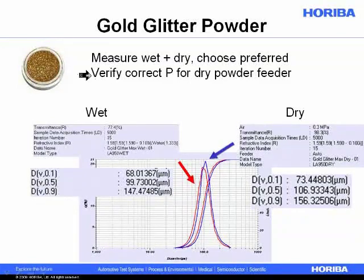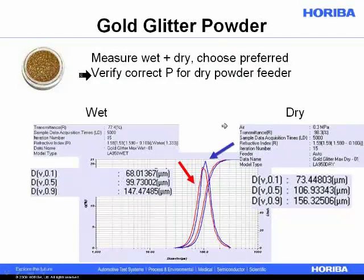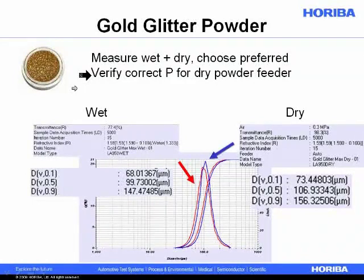Sometimes if we're going to choose to do the measurement dry, it's nice to measure it wet as well to verify the dry result makes sense. It might also help us choose the correct pressure for the dry powder feeder. In this case, if we ran up to a slightly higher air pressure and saw a perfect overlay, we might think that is a better pressure. So we also use comparing wet to dry for method development when using the dry powder feeder.